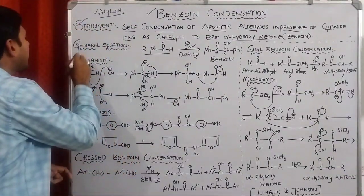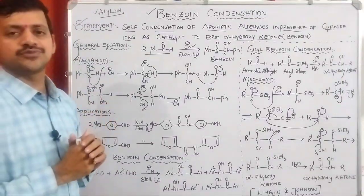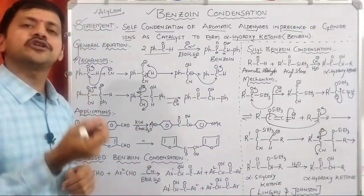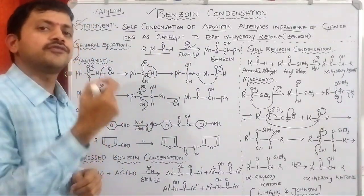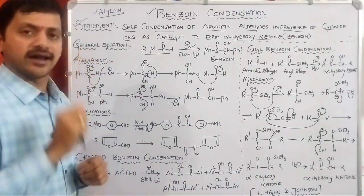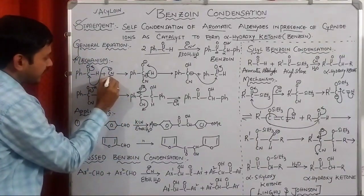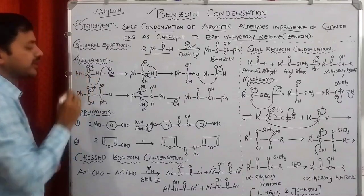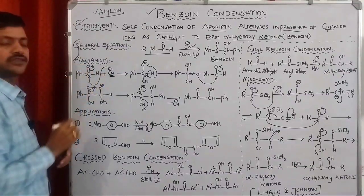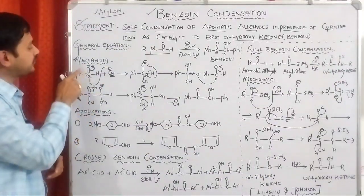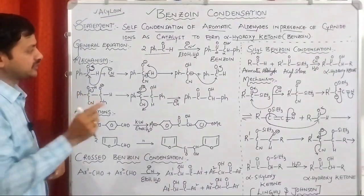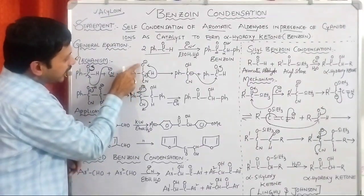The mechanism is very simple. The catalyst is the cyanide ion, CN⁻. It acts as a nucleophile and attacks at the carbonyl carbon of the aldehyde. The pi-bonding electrons move towards the oxygen, and oxygen takes a negative charge. A carbon-CN bond is formed in the first step, giving Ph-C(CN)-O⁻.